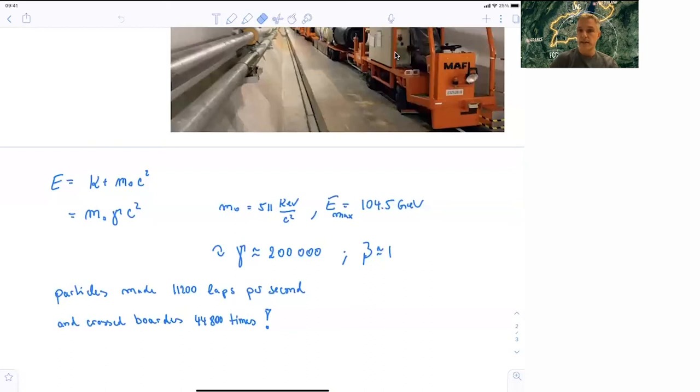And so each particle makes about 11,200 laps per second. That means that there are about 44,800 border crossings for an electron and positron. So they all constantly have to show their passport when they're moving around in that.